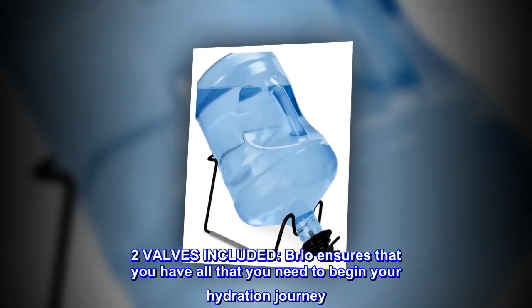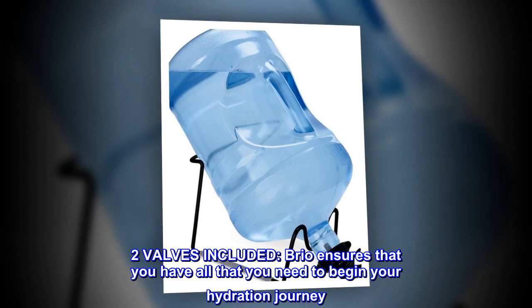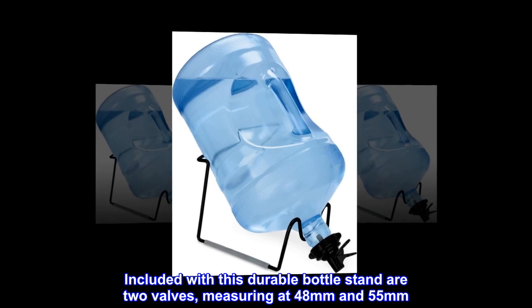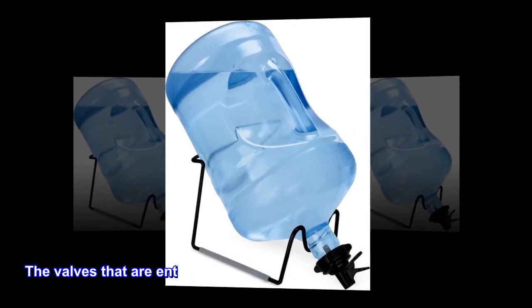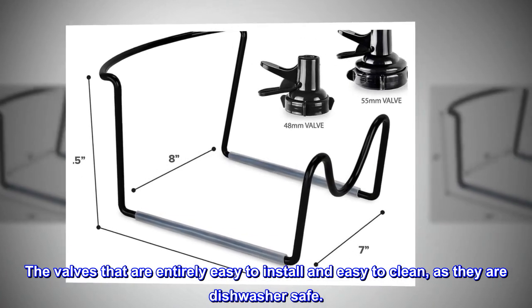Two valves included. Brio ensures that you have all that you need to begin your hydration journey. Included with this durable bottle stand are two valves measuring 48 millimeters and 55 millimeters. The valves are entirely easy to install and easy to clean, as they are dishwasher safe.